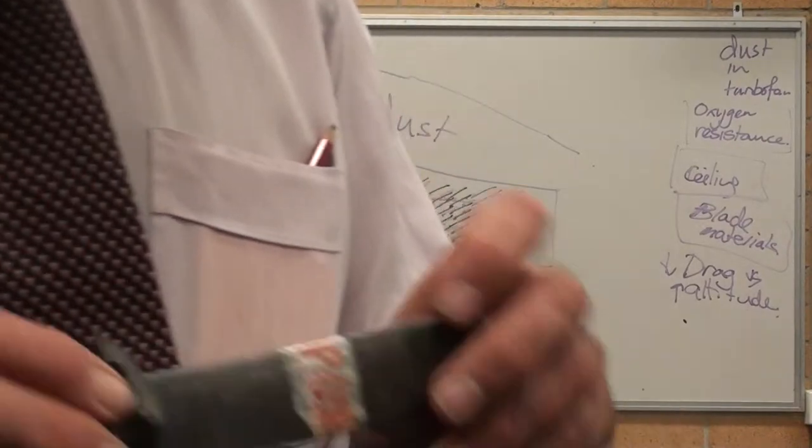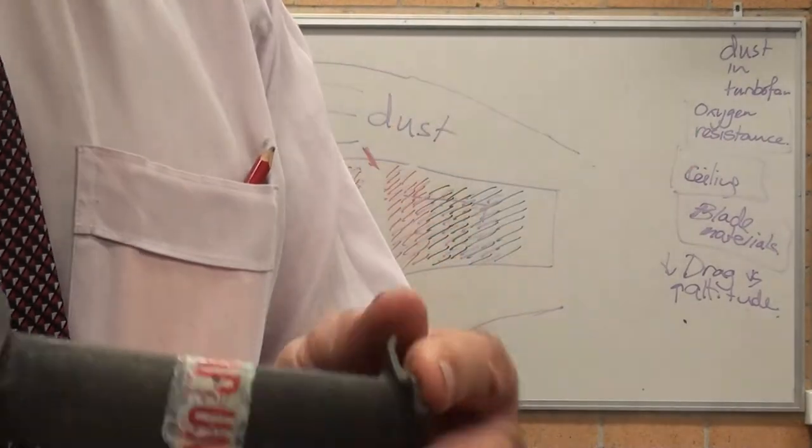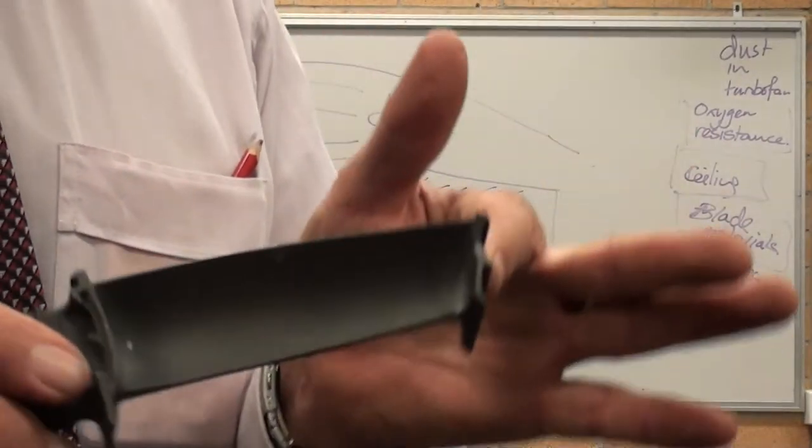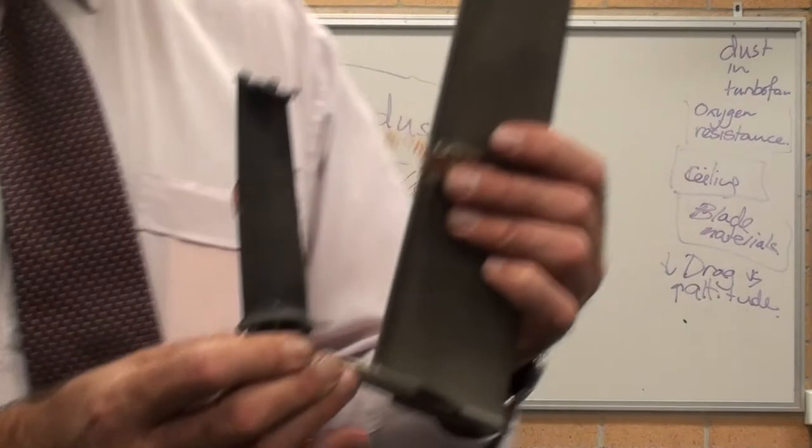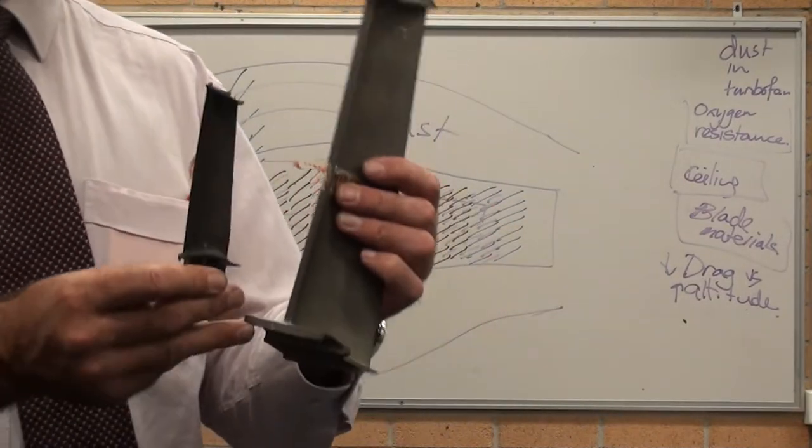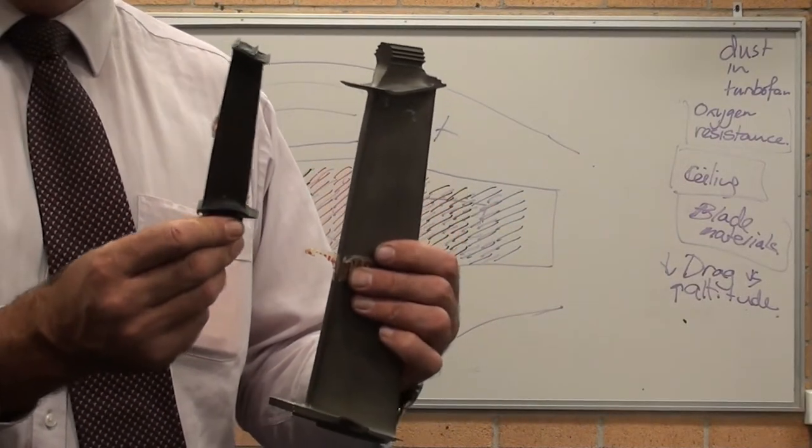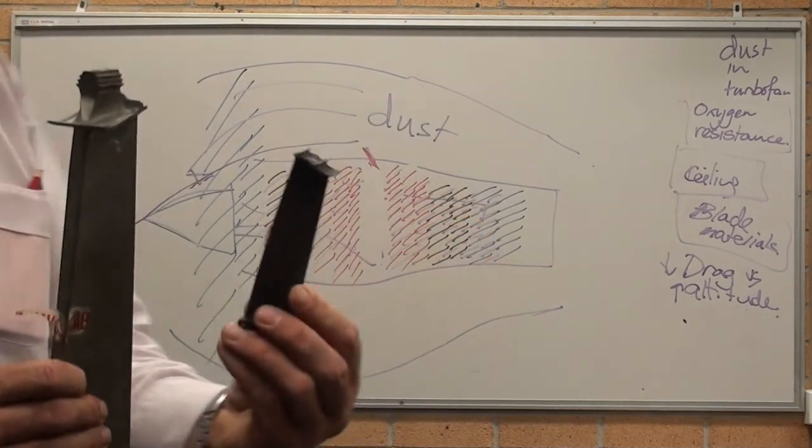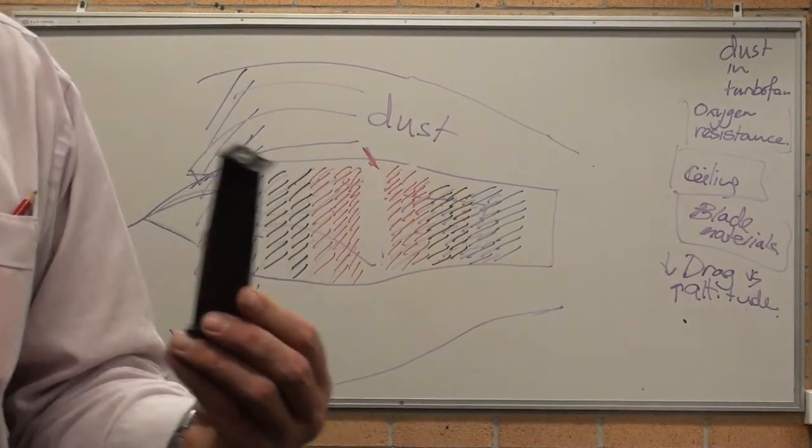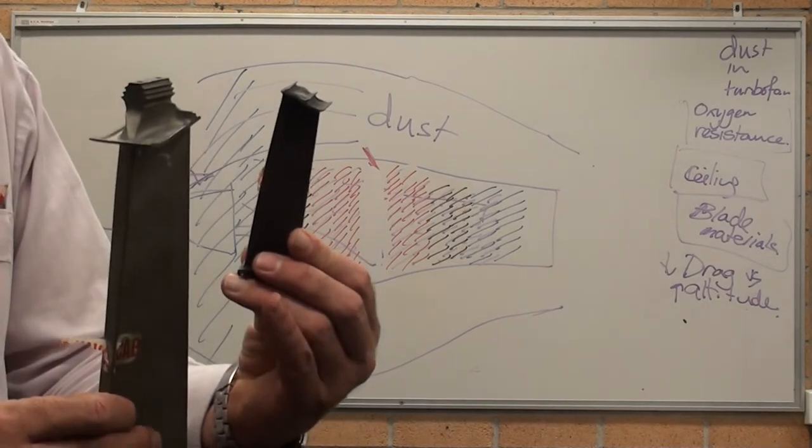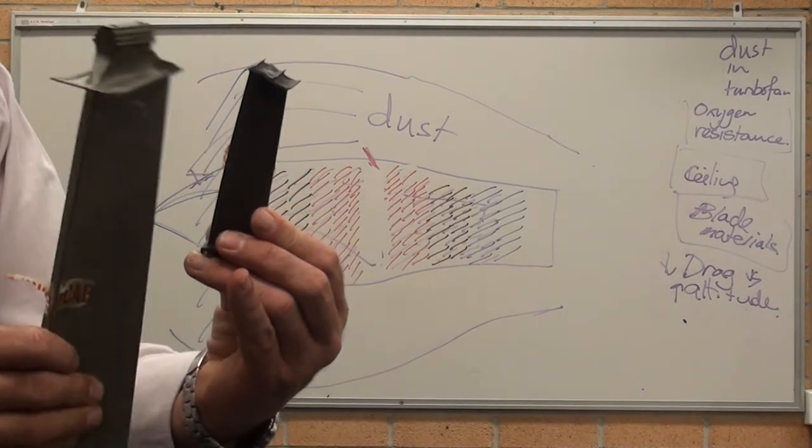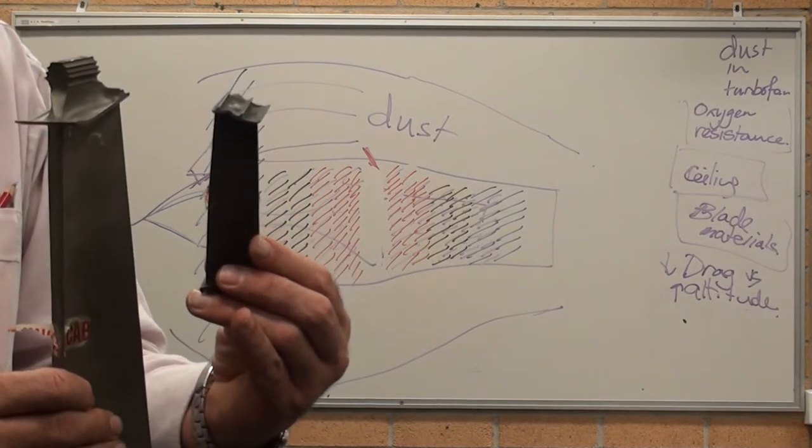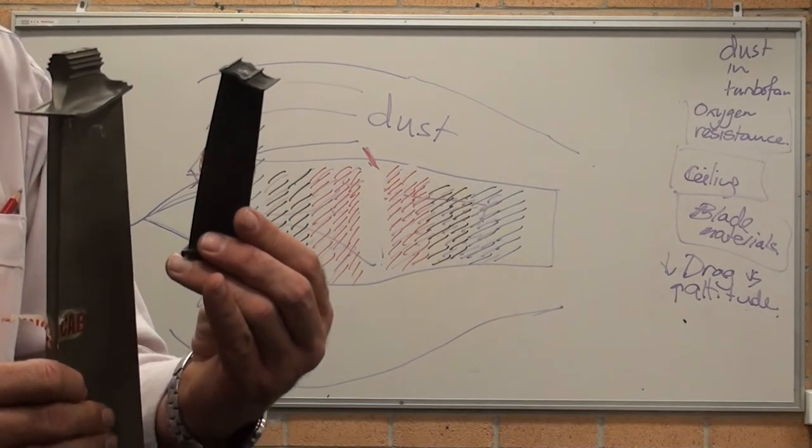When we go through towards the middle section, this is a Rolls Royce blade. Once again, smaller size. Smaller size because the diameter of the engine, I'll put them the right way around. That one's one of the middle ones. There's one of the outside low pressure, middle pressure turbines blades.